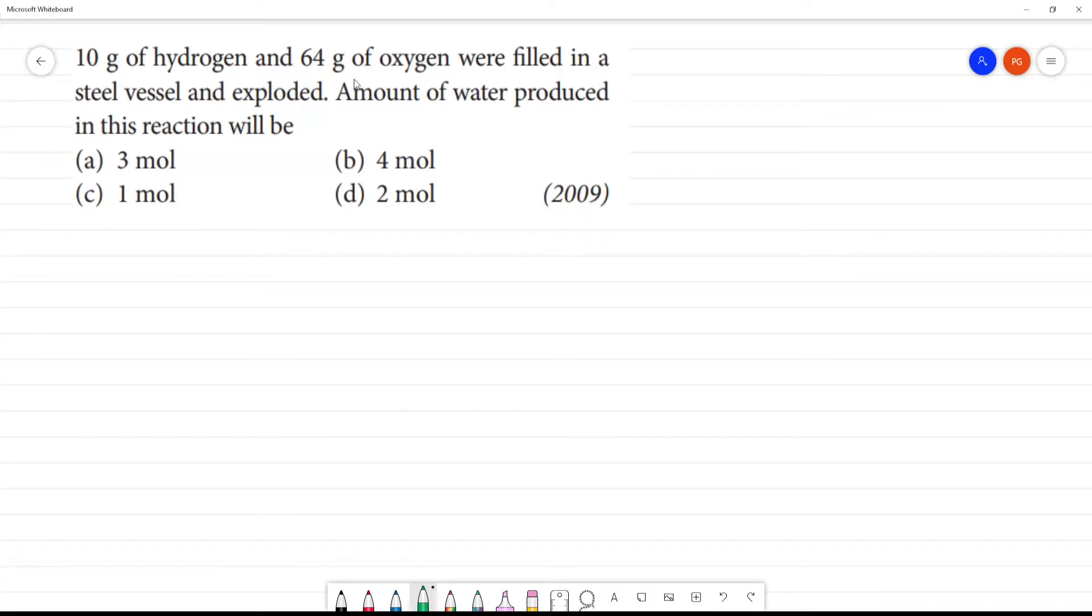10 gram of hydrogen and 64 gram of oxygen were filled in a steel vessel and exploded. Amount of water produced in this reaction will be.